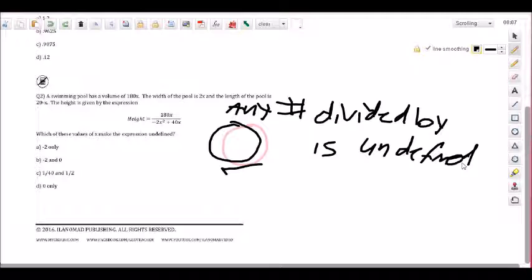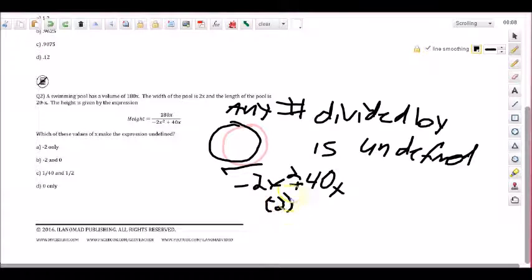Now we know that whatever number would make that bottom expression zero is what would make it undefined. So if we went ahead and took that, if we took that minus 2x squared plus 40x and we took that minus 2 in there, well minus 2 squared is a number times itself, so that would be four, that would be negative 8.